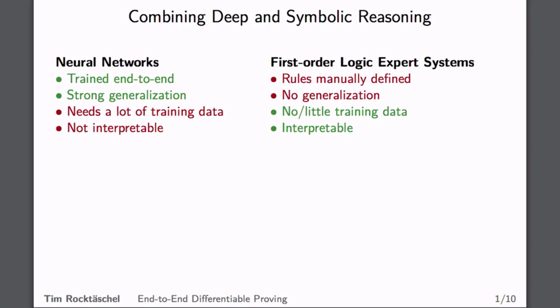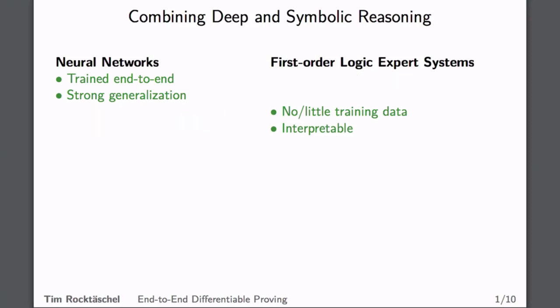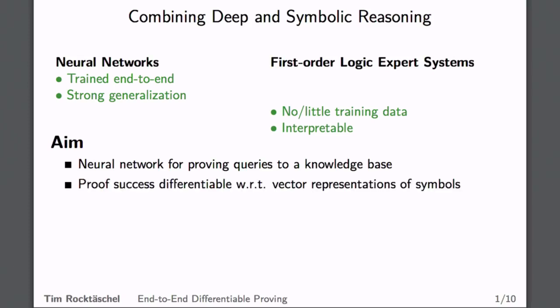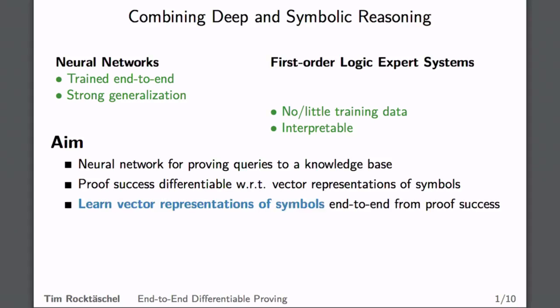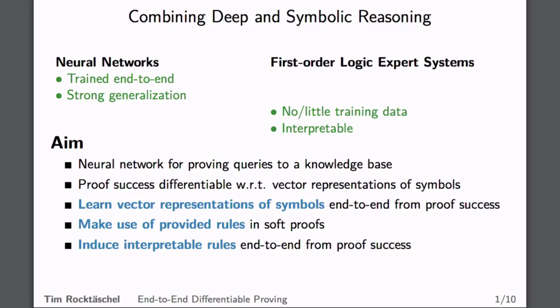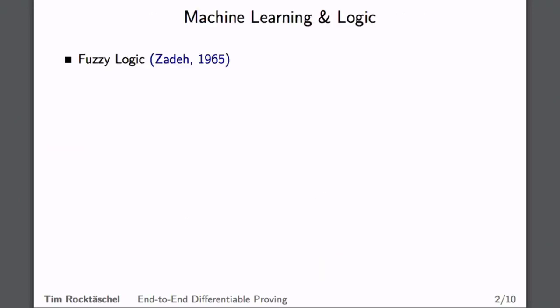How can we get the best of these two worlds? Our aim is to build a neural network for proving queries to a knowledge base, so that proof success will be differentiable with respect to vector representations of symbols. This allows us to learn these vector representations end-to-end from the proof success, make use of provided rules in soft proofs, and most importantly, induce interpretable rules end-to-end from the proof success.